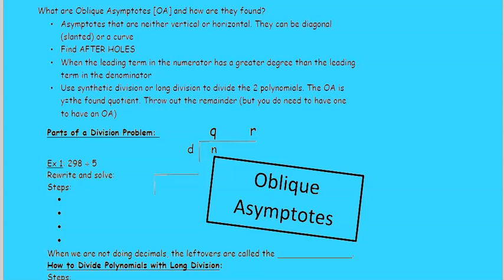But you do have to have one to have an oblique asymptote. If you had a remainder of zero, there would be no oblique asymptote.